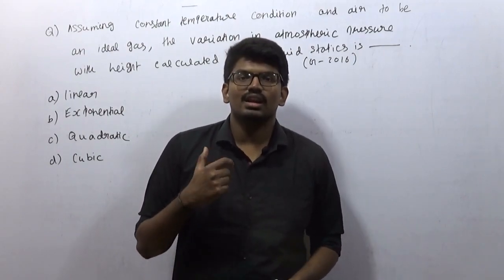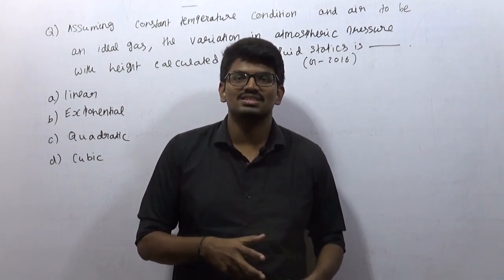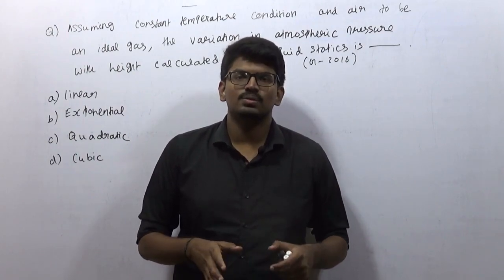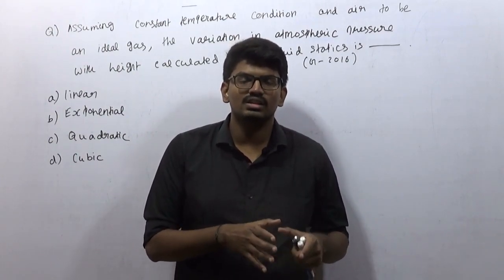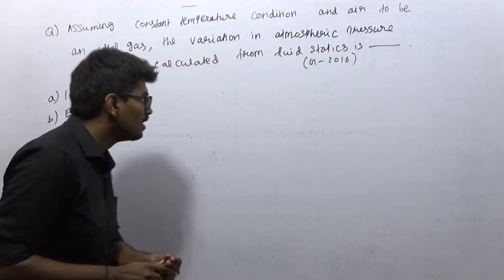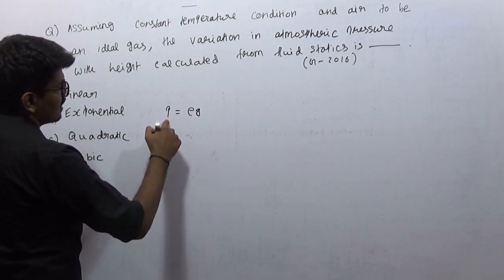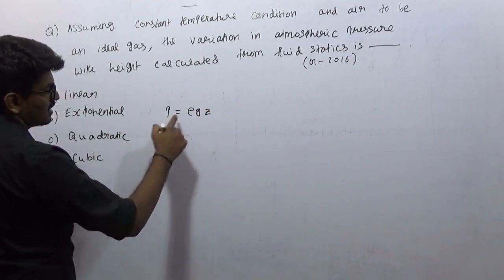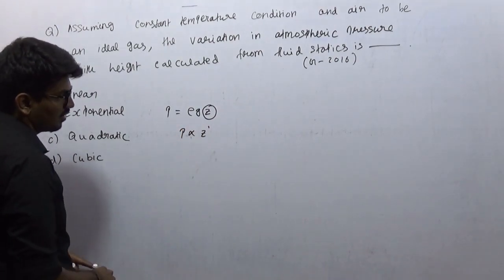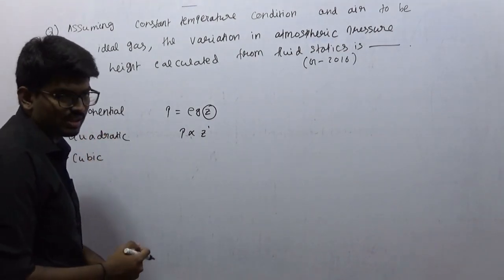If you are remembering any formulas or equations, the more important thing is the assumptions as well. If you are going to read some equations, be very cautious about assumptions. From the hydrostatics law we derived that P equals ρgz, and pressure is directly varying with respect to z — P is proportional to z, P to the power of 1. This is the knowledge we got from the hydrostatics law.